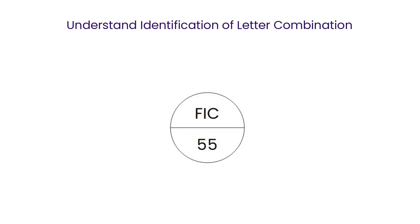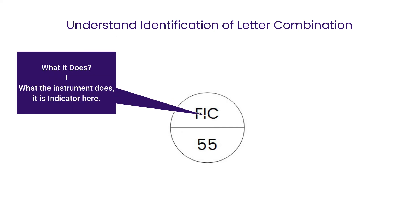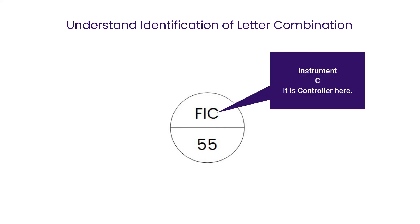Now let's understand the identification of letter combinations. In this symbol, the first letter is the variable being measured — in this case, F means flow. The second letter denotes what it does — in this case, I means indicator. The third letter indicates the purpose of the instrument — in this case, C means controller. And 55 is the number used to identify the loop number.